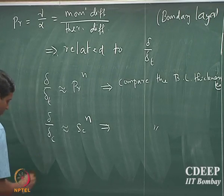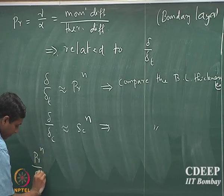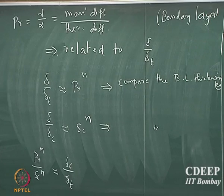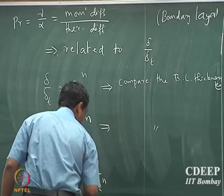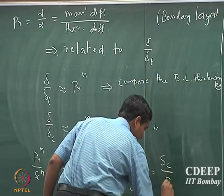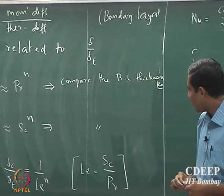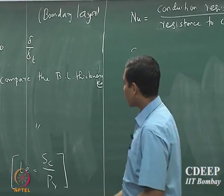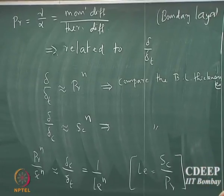So immediately we could define — I can take a ratio of these two. I can say Prandtl number to the power of n over Schmidt number to the power of n, so that goes as delta-c by delta-T. That is called Lewis number. Lewis number is defined as Schmidt divided by Prandtl number. Remember: Prandtl is momentum by thermal diffusivity, Schmidt number is momentum by mass diffusivity. So Lewis number will be thermal by mass diffusivity — that is, alpha by D-AB — where alpha is the thermal diffusivity of the fluid and D-AB is the equimolar mass diffusivity of the species.